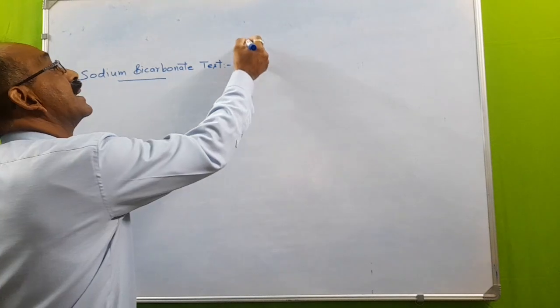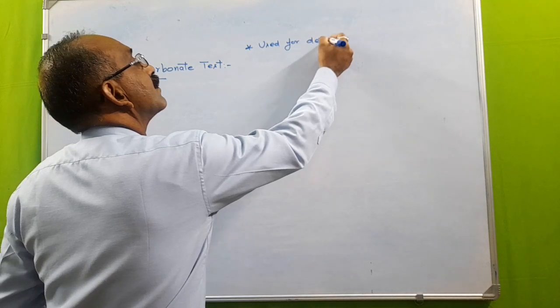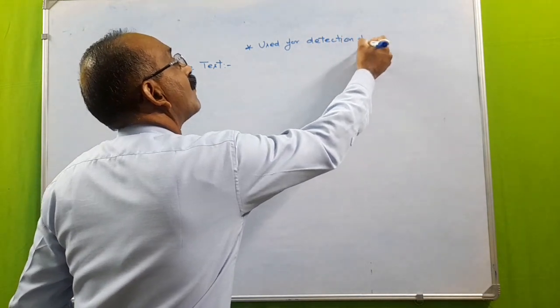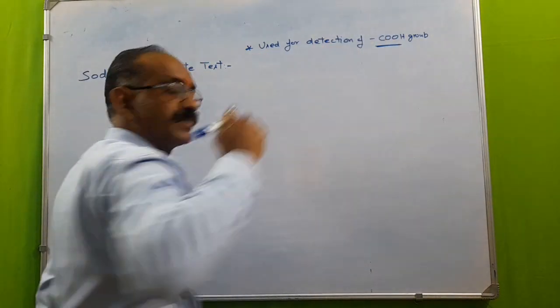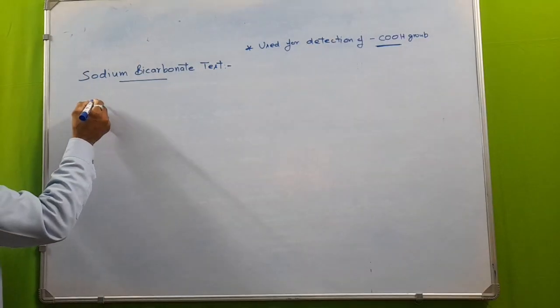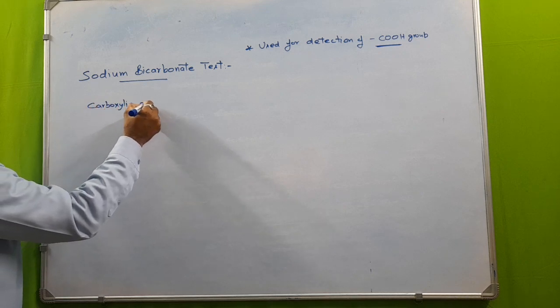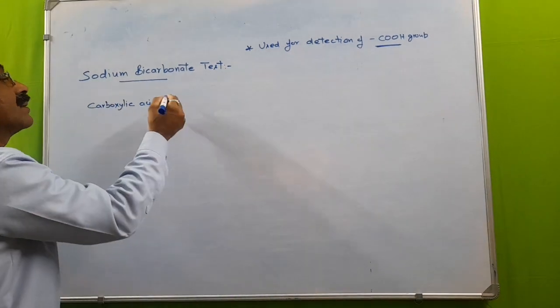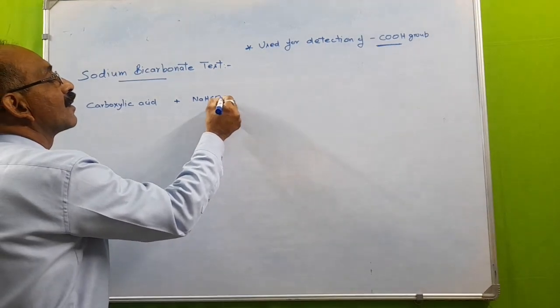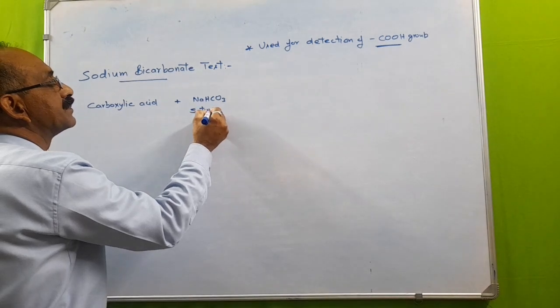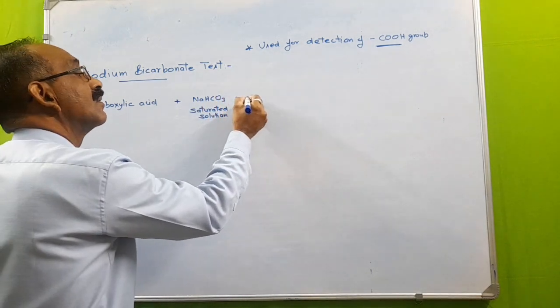The sodium bicarbonate test is used for detection of the COOH group. See what happens here when carboxylic acid, any carboxylic acid whether it is aliphatic or aromatic, is treated with saturated solution of sodium bicarbonate.